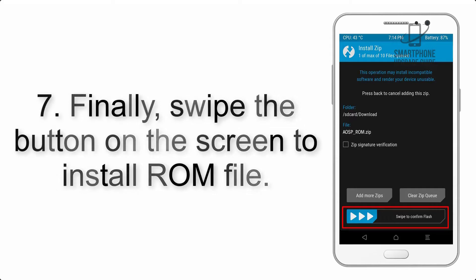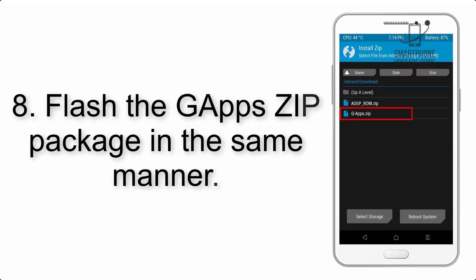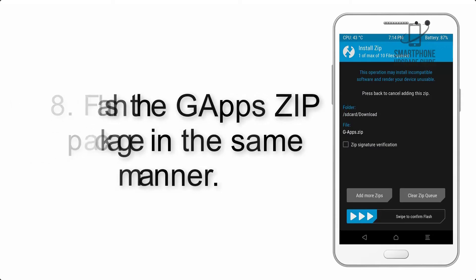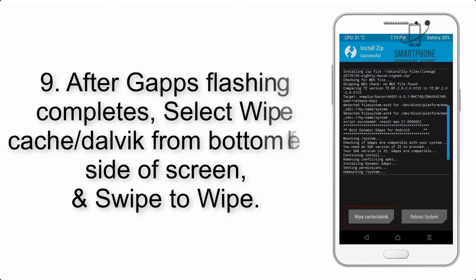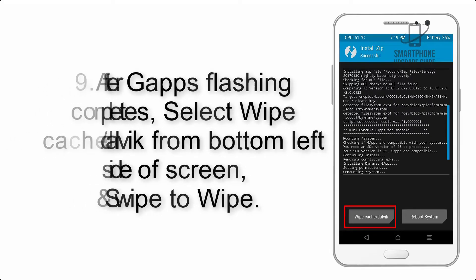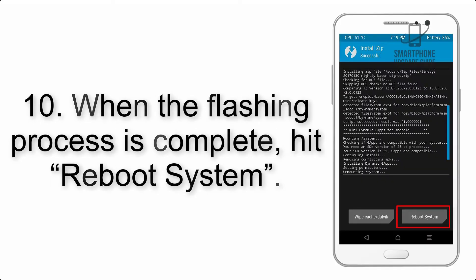Step 7: Swipe the button on the screen to install the ROM file. Step 8: Flash the GApps zip package in the same manner. Step 9: After GApps flashing completes, select Wipe Cache and Dalvik from the bottom left side of the screen and swipe to wipe.